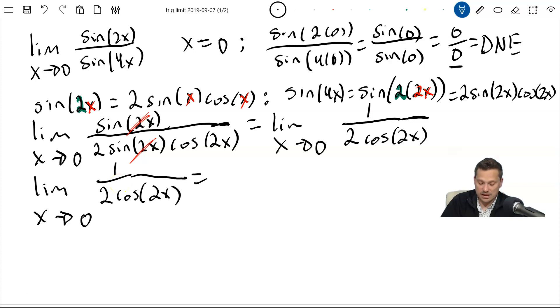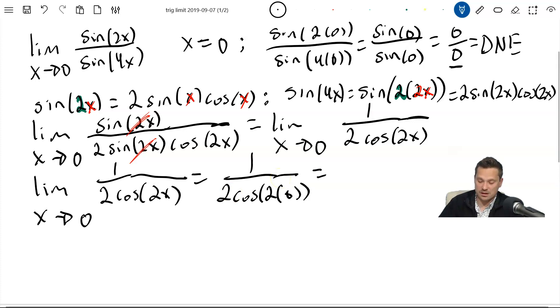So what I have next then is the limit as x approaches 0 of 1 over 2 cosine 2x. I'm just rewriting that. Now by direct substitution, I can just plug 0 in for x. I will have 1 over 2 cosine of 2 times 0, which is working perfectly for us here. And then I will have after that 1 over 2 cosine of 0. The cosine of 0, perhaps you know already from the unit circle, is simply 1. So this becomes 1 over 2 times 1, which is 1 half.